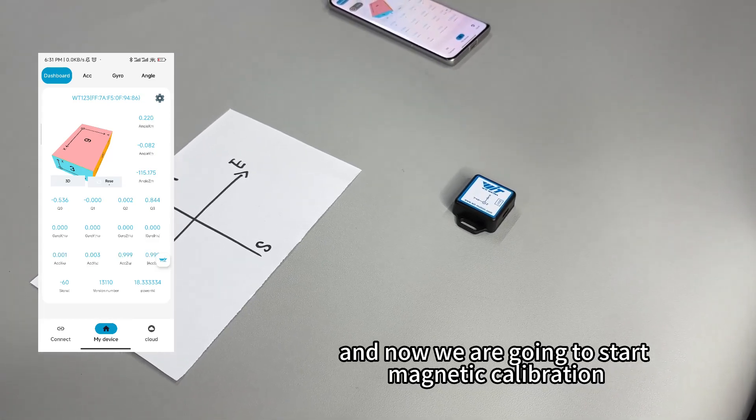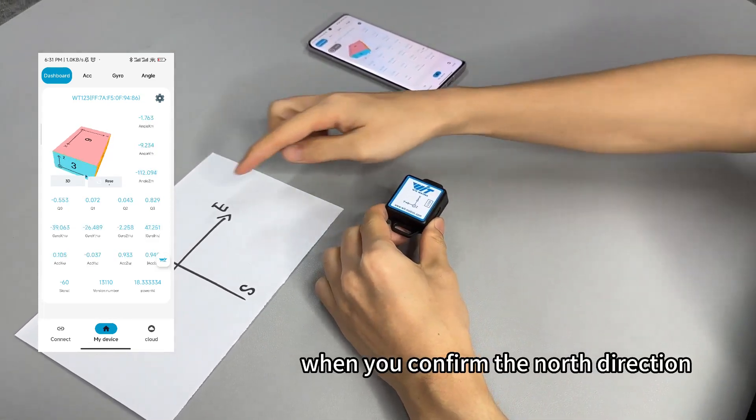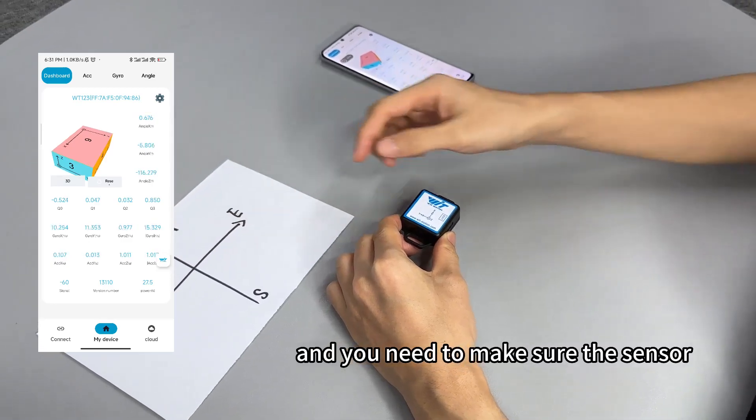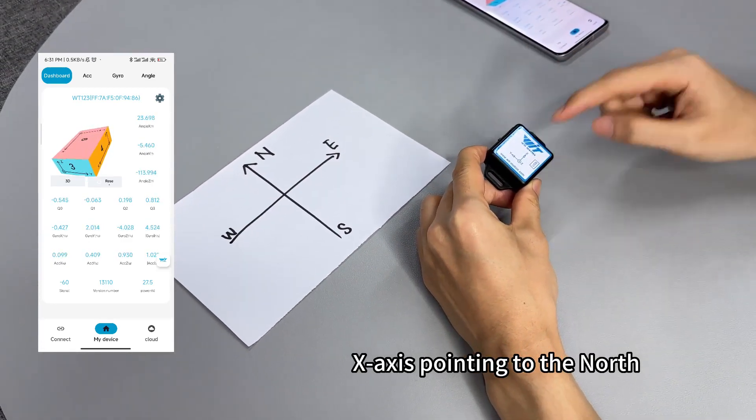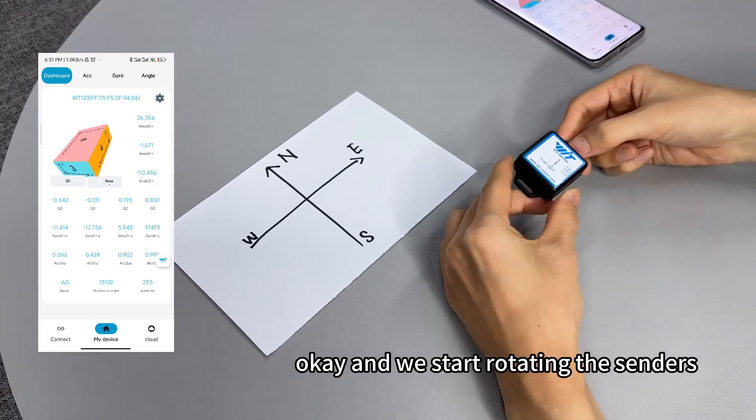Now we are going to start the magnetic calibration. When you confirm the north direction, you need to make sure the sensor's x-axis is pointing to the north and the label side is pointing toward yourself.